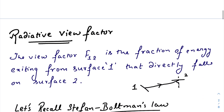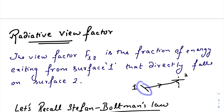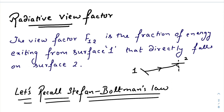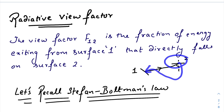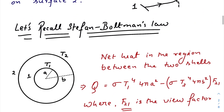Before coming to the solution, I would like to tell a few things about the radiative view factor. The definition tells us that a view factor F₁₂ is the fraction of energy exiting from surface one that directly falls on surface two. So if surface one is emitting some energy, only some fraction of the total energy falls on surface two — that fraction is F₁₂. Similarly, the fraction of energy from surface two that falls on surface one is F₂₁.